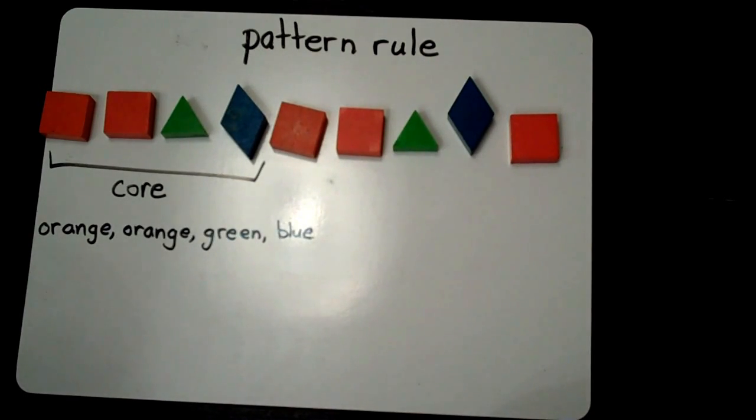Many patterns have more than one attribute that repeats. In this pattern I've noticed not only do the colors repeat, but the shapes repeat as well. So I could write the pattern rule a different way if I look at a different attribute. Let's take a look at the attribute of shape.